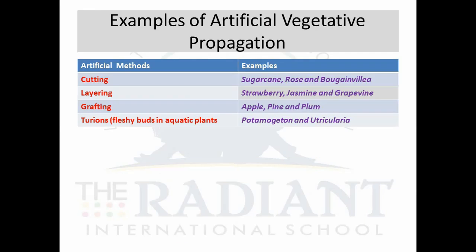Now here are some examples of artificial vegetative propagation — mainly three types, with a fourth different from these three. The first is cutting, layering, grafting, and turions. Cutting takes place in sugarcane, rose, and Bougainvillea. Cutting means a part of a plant branch is cut obliquely and planted in the soil, where it develops roots and grows into a new plant. This is commonly done in our homes as well.